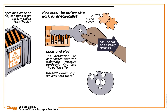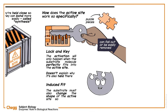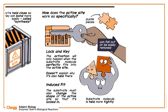So scientists modified the lock and key model to one called the induced fit model. Instead of the reaction happening simply when a substrate is the right shape, the substrate must also change the shape of the active site so that it's locked in. This way the substrate is held more tightly and the reaction can be catalyzed much more effectively.